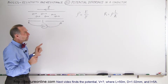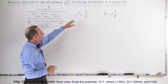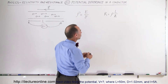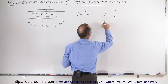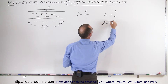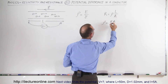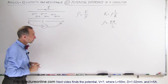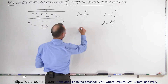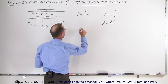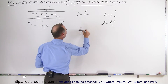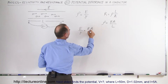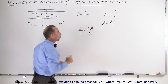First, we're going to see that we can express this in terms of the resistivity. If we change this equation, we can say that the resistivity is equal to the resistance times the cross-sectional area divided by the length of the piece of wire in consideration. Now we can set those two equations equal to each other, so we can say that the electric field strength divided by the current density is equal to the resistance times the cross-sectional area divided by the length of wire.